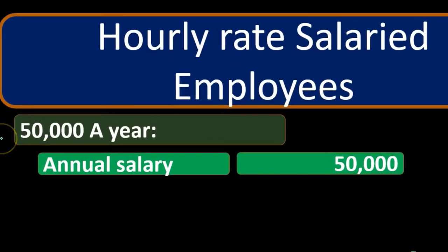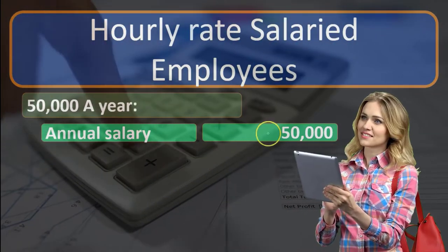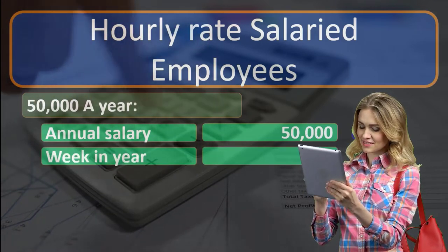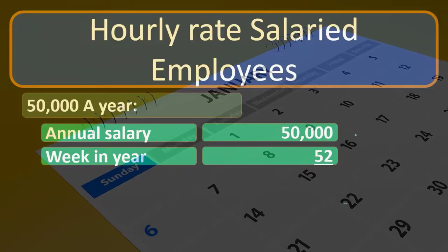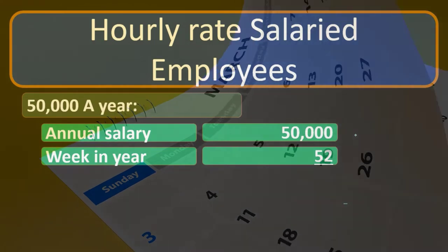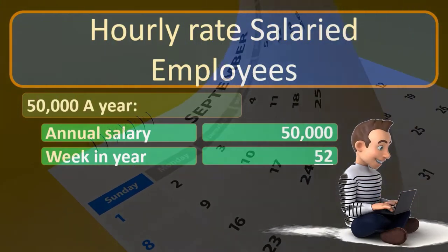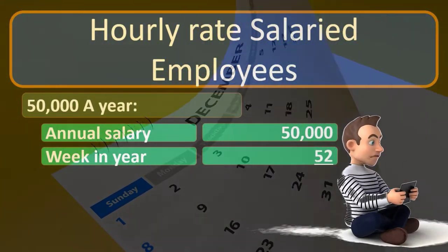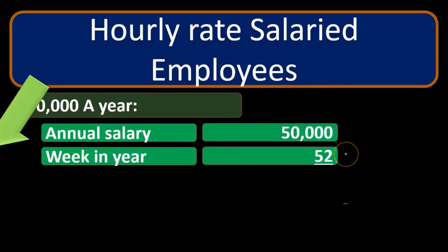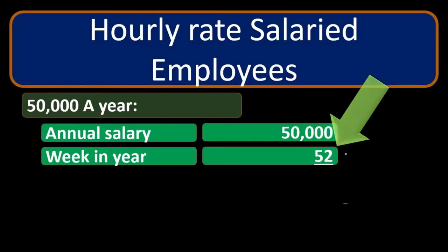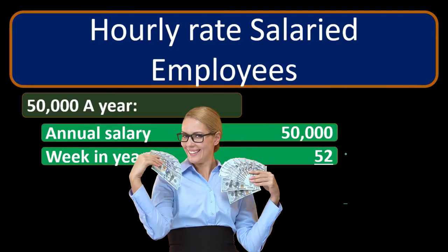If we're given an annual rate of $50,000 a year and we want to find the hourly rate, we take the $50,000 and divide it by 52 weeks in the year, rather than dividing by 12 months. Remember that 12 months is going to be less accurate — that's why we have calendars slightly off and leap years. Using 52 weeks is more accurate, and we want to know that number for payroll calculations.